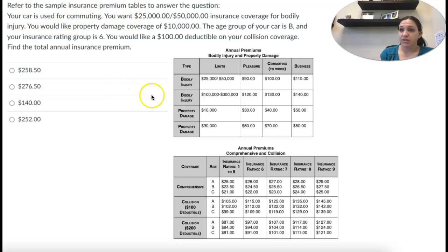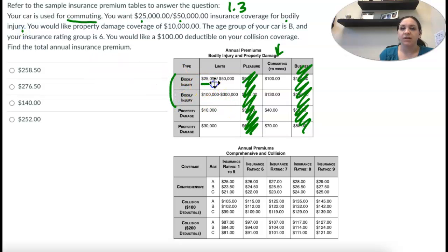So refer to the premium tables, that's what this is, it's from 1.3. So your car is used for commuting, so that's this column, not pleasure, not business, this column. And you want $25,000 to $50,000 insurance coverage for bodily injury, so bodily injury we want $25,000/$50,000, so $100 is what that's going to cost. You would like property damage coverage of $10,000, so this one is $40.